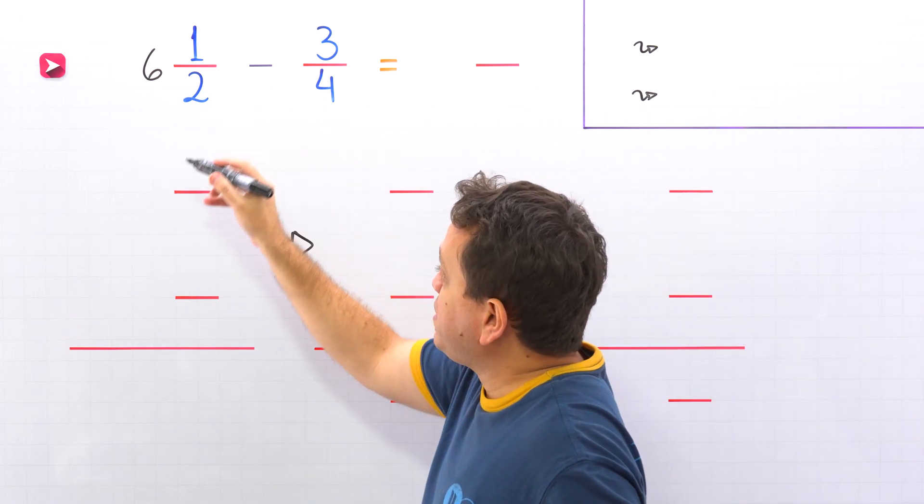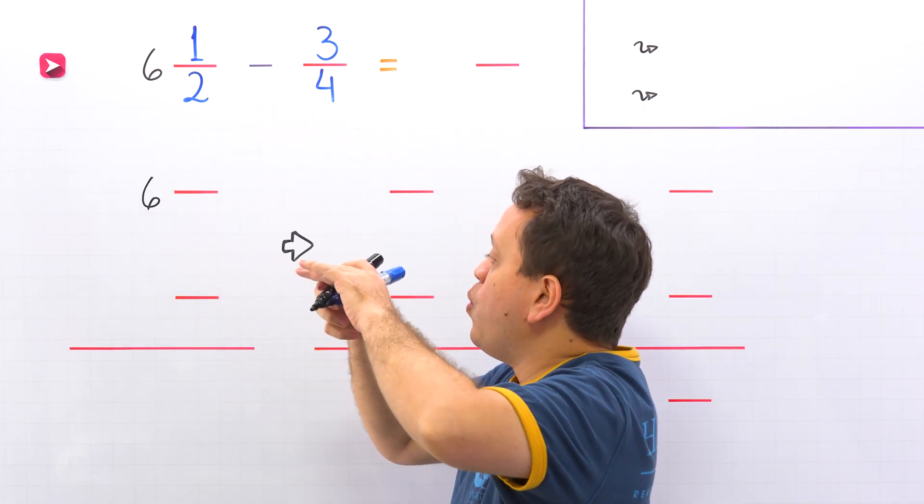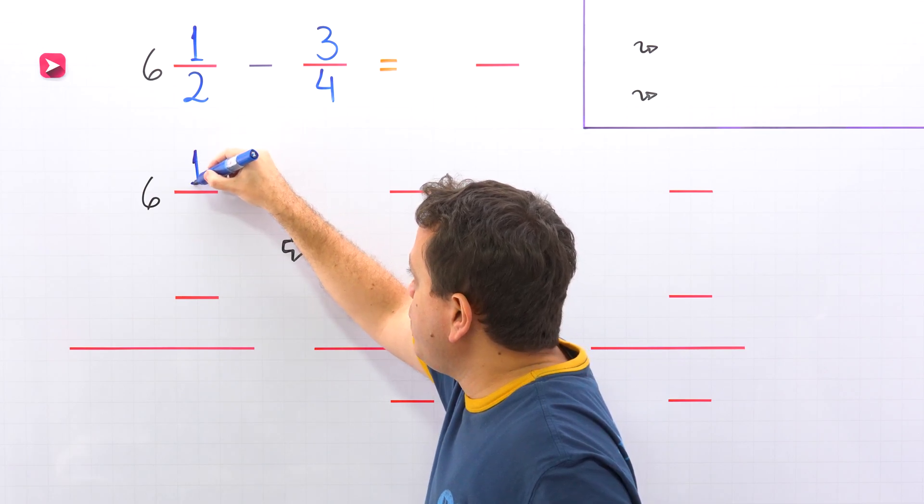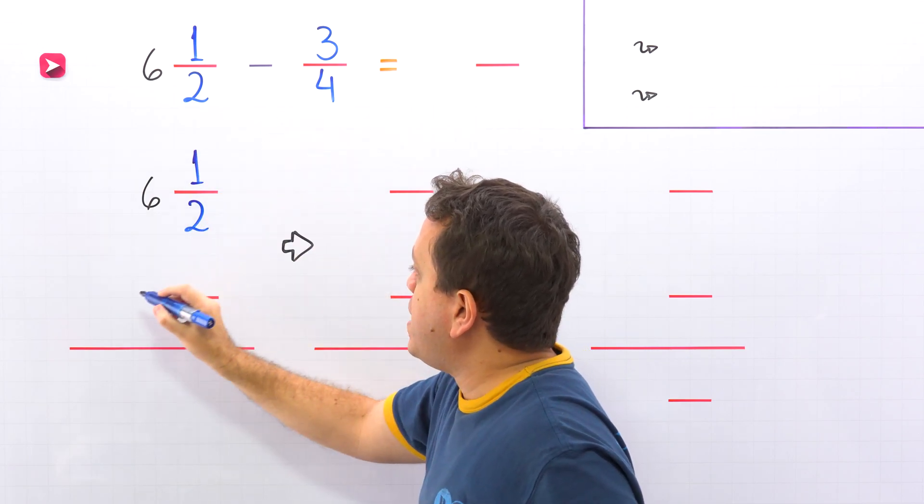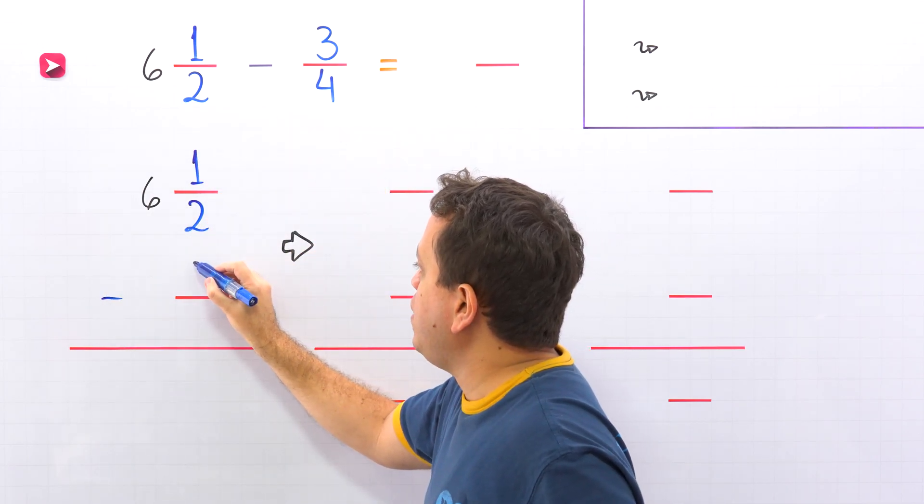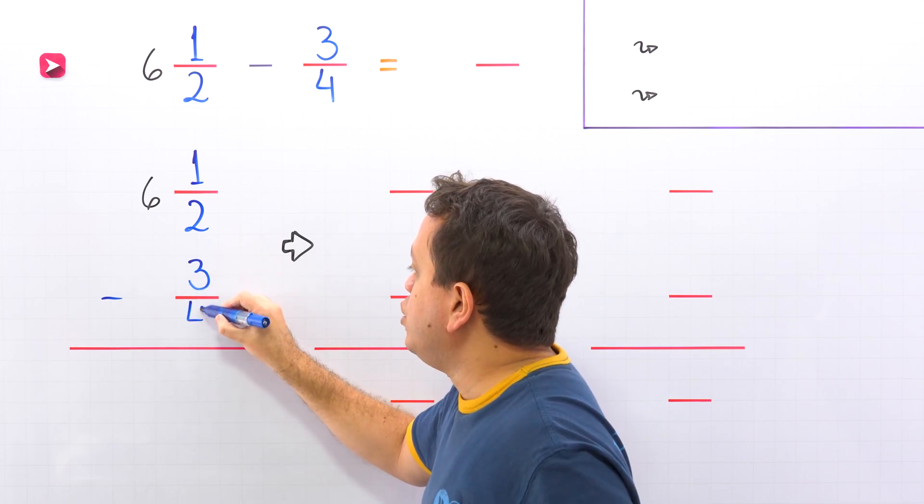We'll start with the mixed number 6 and 1/2, then we have the minus sign and the fraction 3/4. To find the difference, we'll start by subtracting the fractions, 1/2 minus 3/4.